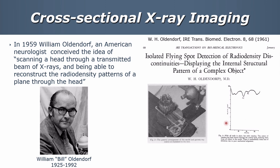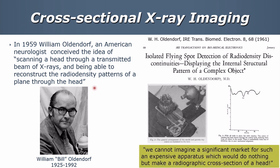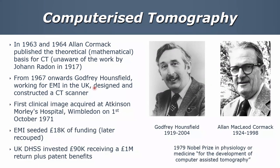The big problem was that these are projection images, and there was a lot of interest in trying to create cross-sectional images. In 1959, William Ohlendorf, an American neurologist, came up with the idea of scanning a head through a transmitted beam of x-rays and being able to reconstruct the radio-density patterns of planes through the head. When he took it to a leading medical equipment vendor, their reply was: 'We cannot imagine a significant market for such an expensive apparatus which could do nothing but make a radiographic cross-section of a head.'